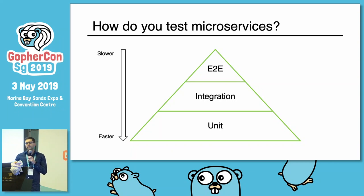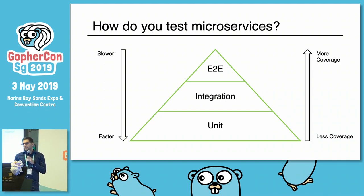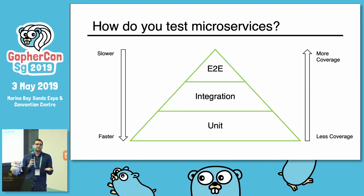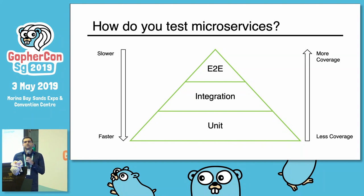When you test at the end-to-end level instead of the unit level, your tests are going to be slower, they're going to be more costly, and you're not going to be able to cover as much — but there's less isolation, so you cover more of the overall system. You get more coverage, but there's a middle ground approach here, which is the integration level, which is what I think you should be testing in the beginning.